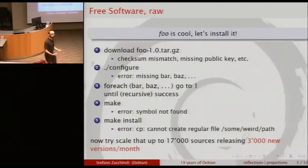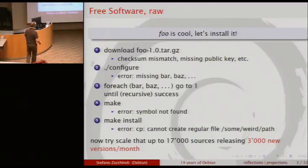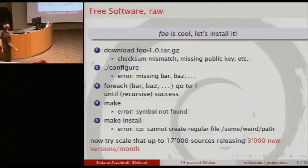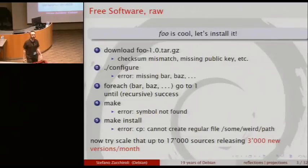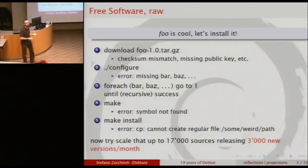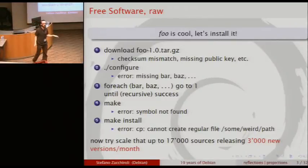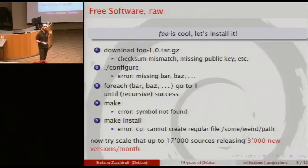You had to download the source code of some software — source code being one of the key points of free software — then verify that you actually downloaded the right thing, that no one had tampered with it. And then you had to go through this magic sequence that the first time I saw it felt like a religious mantra: configure, make, and make install. We all prayed to this mantra and magically the software would be installed. But then you'd discover that at configure time you might be missing other software, and make could fail with messages completely incomprehensible to me, like 'symbol not found' or 'cannot create a regular file.'